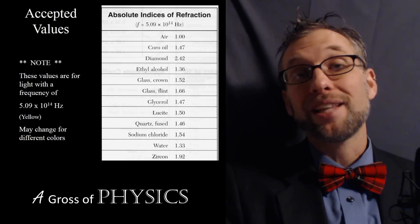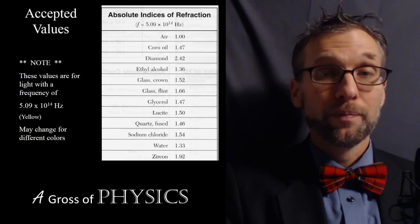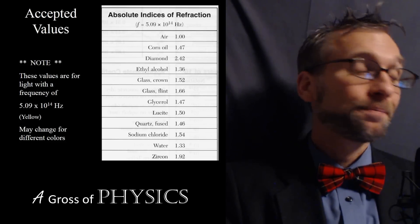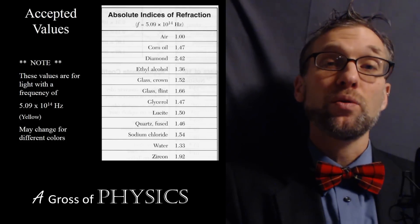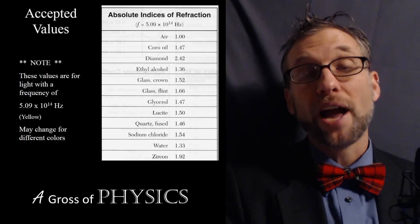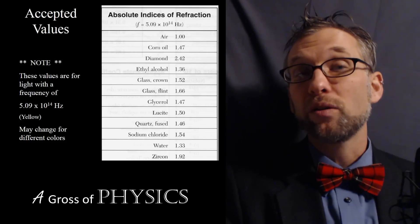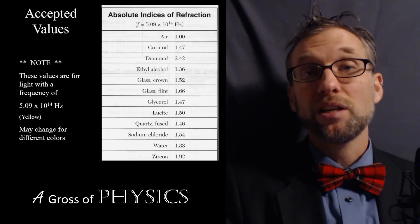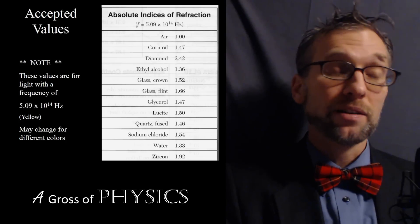Remember, if you get a number less than 1, you probably did something wrong and may have inverted C and V. We do have a chart in the reference table that gives us values to determine the index of refraction for different materials. Remember, though, that's only for yellow light — so most assessment questions will state that the frequency is 5.09 times 10 to the 14 hertz, because that's what the chart gives us.